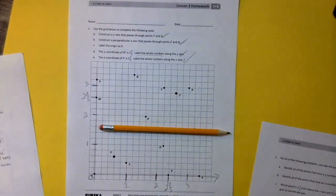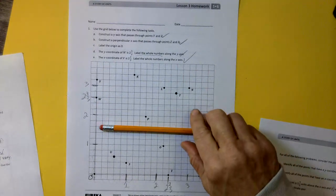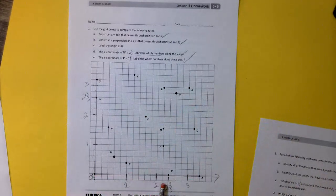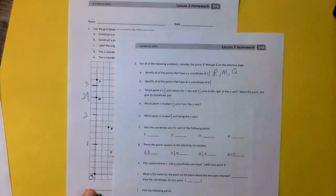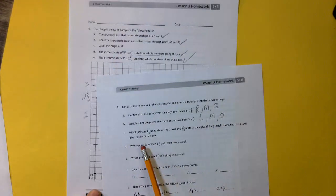The next question, identify all the points that have an x-coordinate of 2 and 1 fifth. So we're going to look at, we're going on the x-coordinate at 2 and 1 fifths. So that's everything on this line. That's L, M, and O. So L, M, and O.